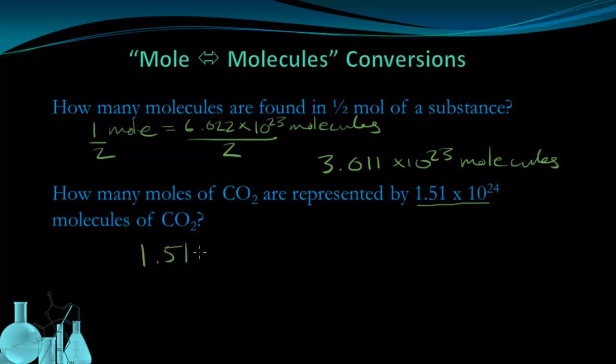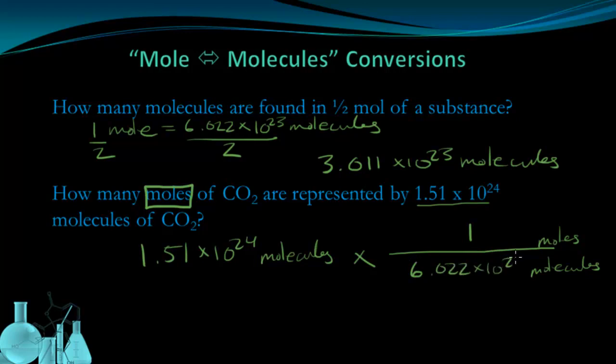I'm given 1.51 times ten to the twenty-fourth molecules. And I'm going to multiply that by a fraction. On the bottom of the fraction, I'm going to have molecules. And on the top of the fraction, I want to get moles, so I'm going to put that there. And I know that one mole represents 6.022 times ten to the twenty-third molecules. Now that I have this set up, I can just take this original number, 1.51 times ten to the twenty-fourth, and divide it by 6.022 times ten to the twenty-third. That's going to get me 2.5 moles.